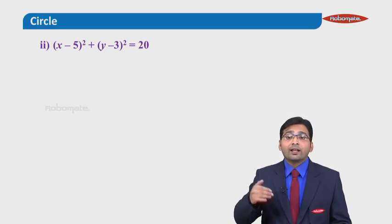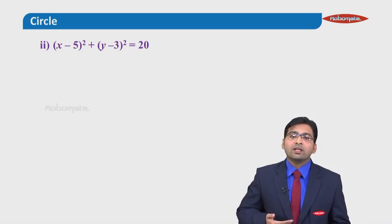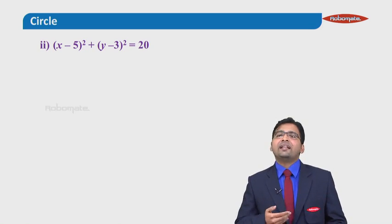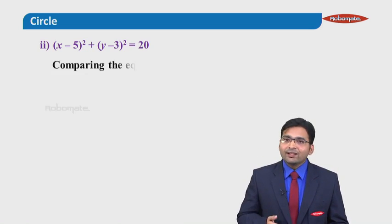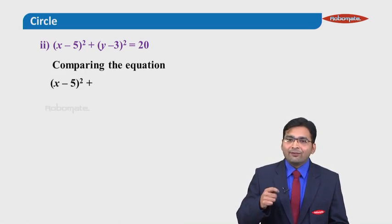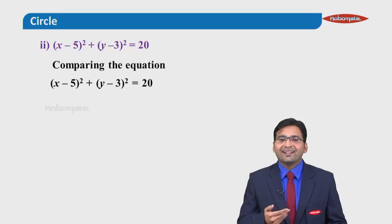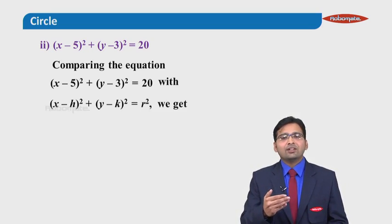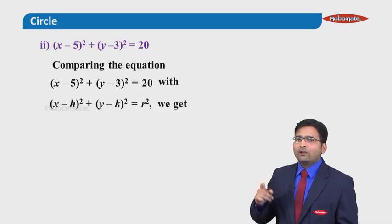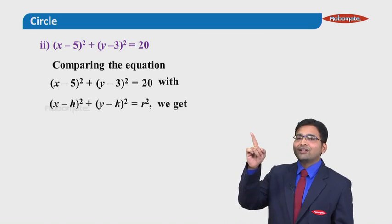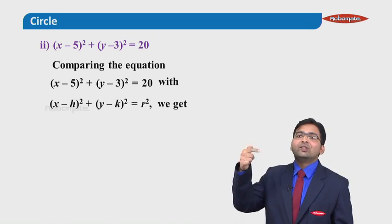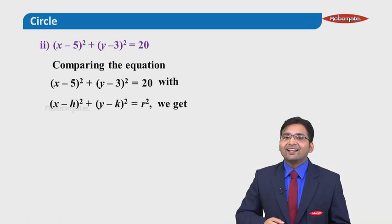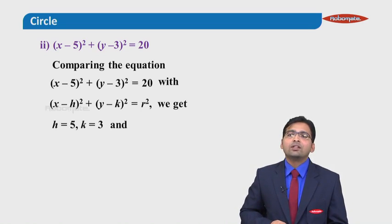The next is x minus 5 bracket square plus y minus 3 bracket square equals to 20. Everyone must have identified that this is a Type 2 question. If it is Type 2, again I will compare the given equation with our Type 2 formula, that is the center-radius form. On the left hand side, there is x minus h bracket square, so I can say h is 5, and k is 3.